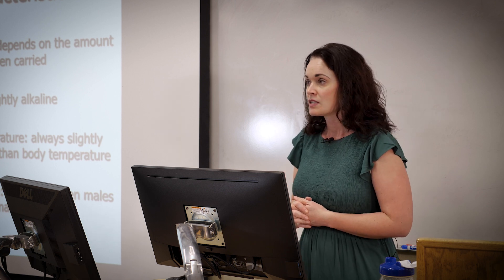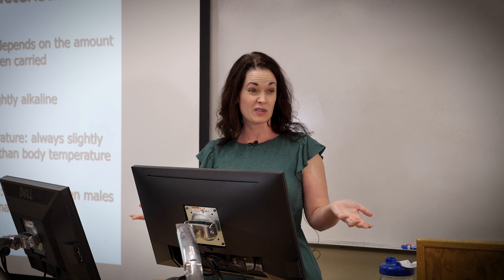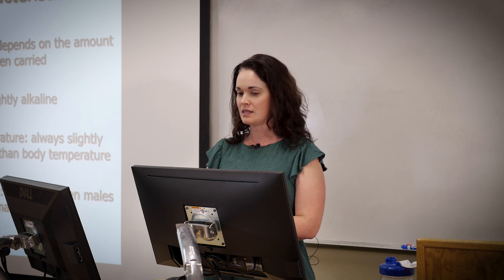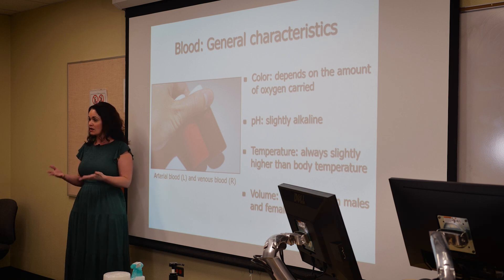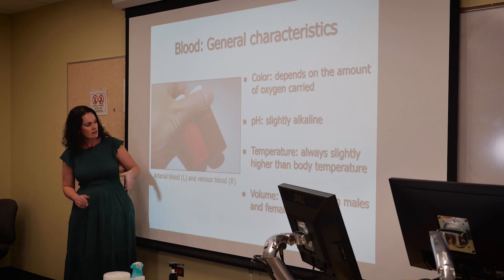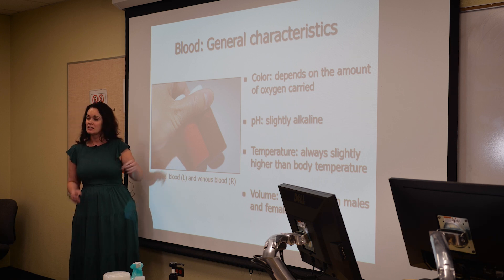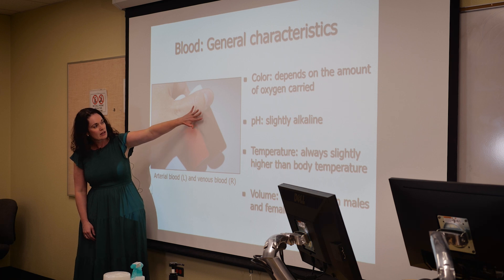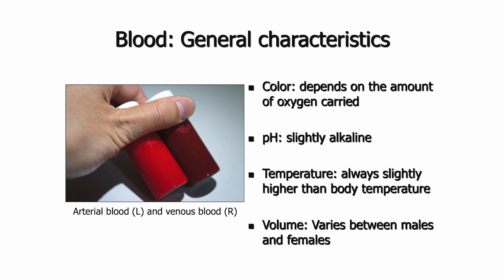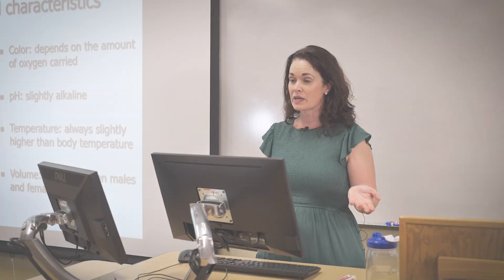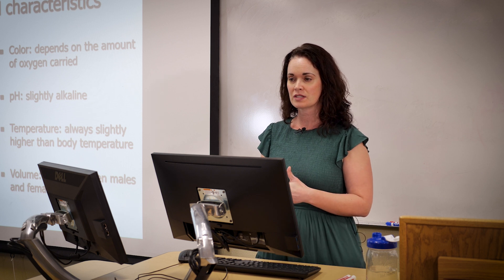Going back to the characteristics of blood — we all know that it's red, but the exact color actually depends on how much oxygen it's carrying. Looking at these two vials of blood: the one on the left is a bright scarlet color because it's arterial blood, highly oxygenated. The other vial is venous blood — it's given up a lot of its oxygen — so it appears a darker, almost maroon color.